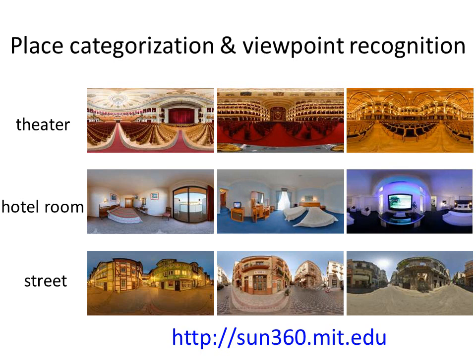The goal of this paper is to build a place categorization and viewpoint recognition model. We use 360-degree spherical panoramic images for training because they cover all possible views within a place. Panoramic images were downloaded from the internet and given a scene category label, such as theater or street. There are 80 place categories in total in the Sun 360 panorama dataset, and 26 categories are used in the following experiments.